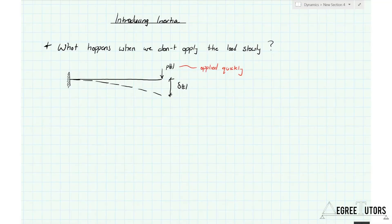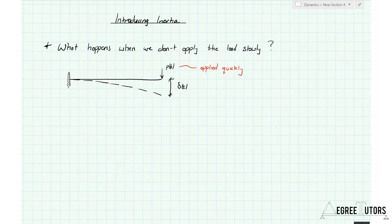In this lecture we're going to introduce the concept of inertia. Inertia is the big thing that separates a static problem from a dynamic problem. We're going to ask ourselves: what happens when we don't apply the load to our cantilever beam slowly? What happens if we apply that load quickly? This is really going to show up the key differences between a static analysis and a dynamic analysis.